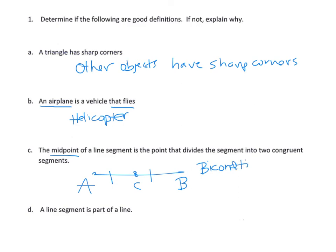Testing 'a line segment is part of a line': if it is a line segment, then it is part of a line; if it is part of a line, then it is a line segment. This fails because a ray is also part of a line. Therefore, this is not a good definition — a ray serves as a counterexample.